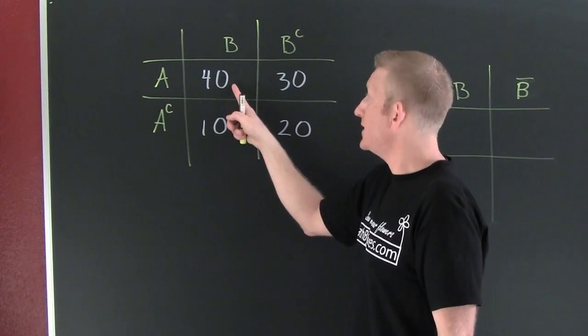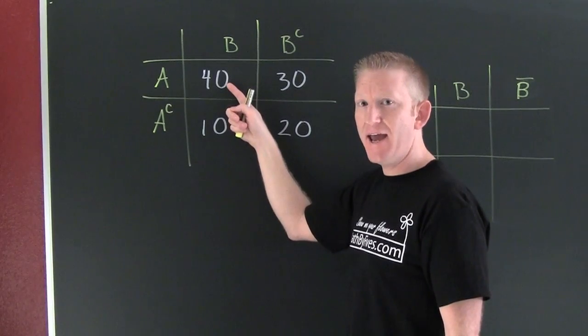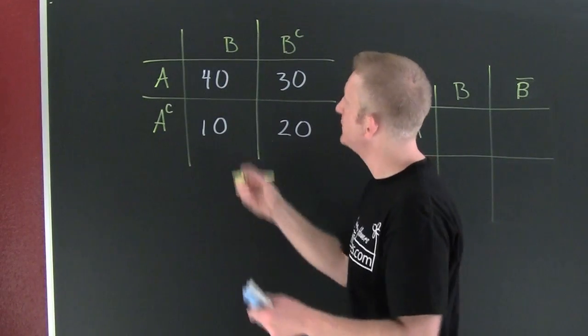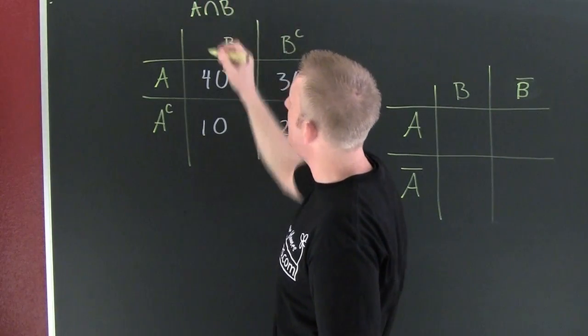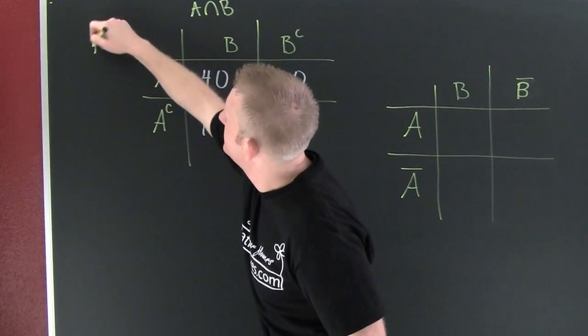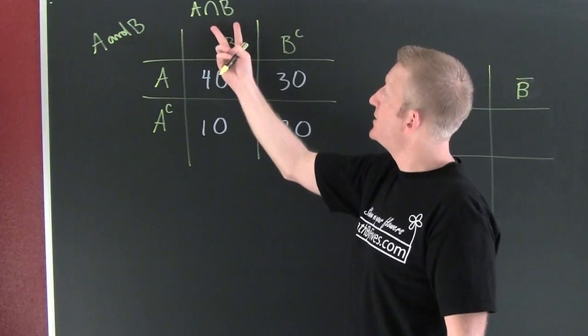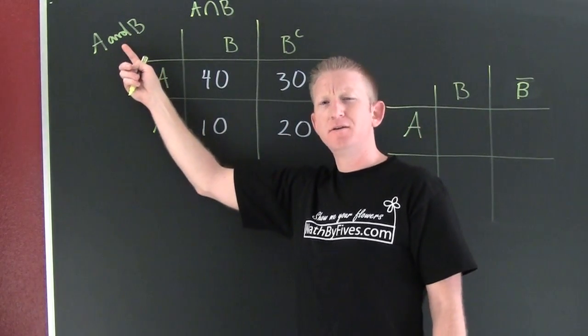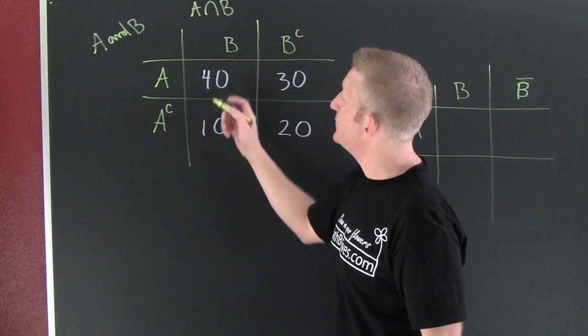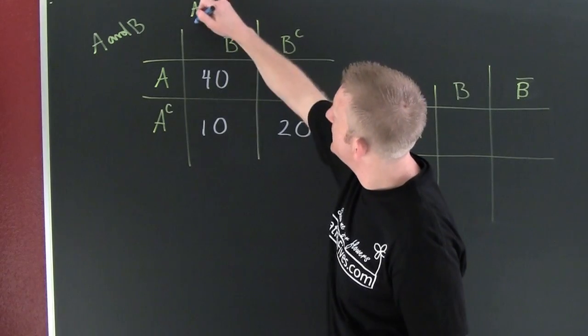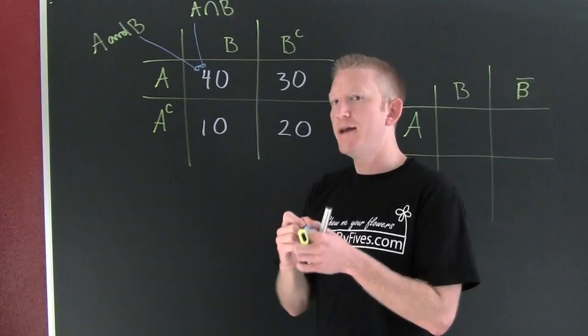This is the number of things that occurred in A and B. This is the overlap of A and B. Some would write it A∩B, and some would write it A and B. These are two different ways—set notation. And then some books have relaxed their standards and use the word 'and.' And that's this value right here. These are the things that occurred in A and B.